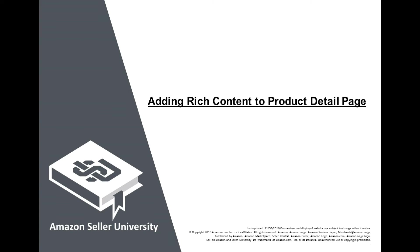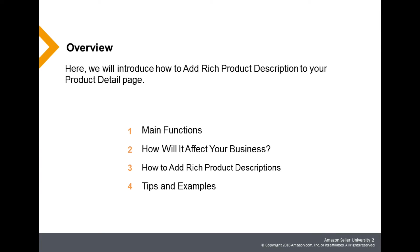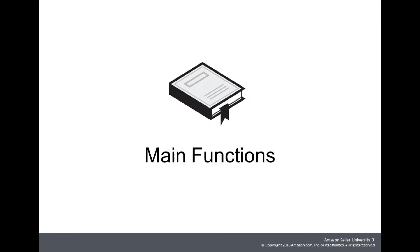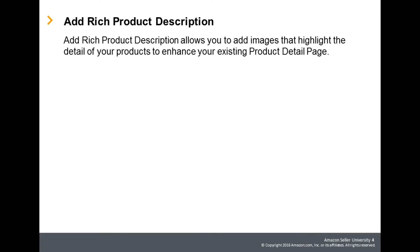Welcome to Seller University. Here we will introduce the use of Rich Product Description, which relays the product's appeal using images and words, recorded at Product Description on the Product Detail page. Rich Product Description is a function to increase a product's appeal by combining images and words at Rich Product Description on the Product Detail page.